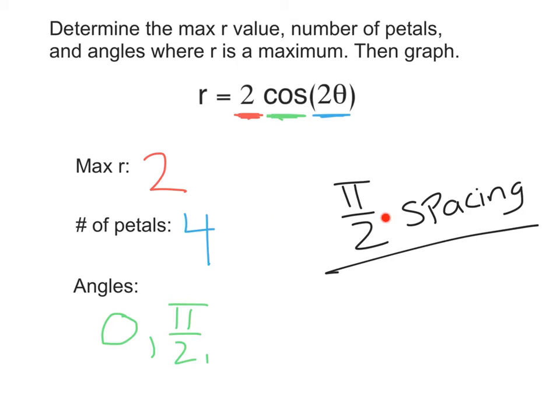Now, our next petal is pi over two further. That's pi over two plus pi over two, which is going to be pi. Then, we've got pi plus pi over two, which is going to be three pi over two. And that should give us our one, two, three, four petals. And we see that if we add another pi over two, that's going to bring us to two pi, which is the same as zero. Perfect.